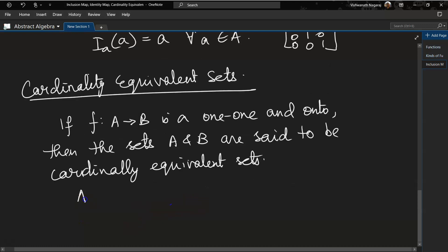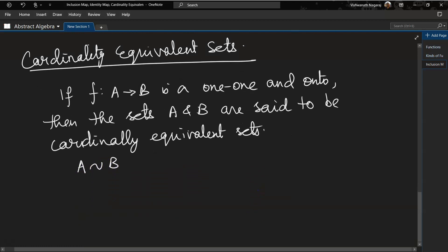We can write this as A is equivalent to set B. Now in case of A equivalent to set of natural numbers N, A is said to be a denumerable set. Now what does denumerable mean?